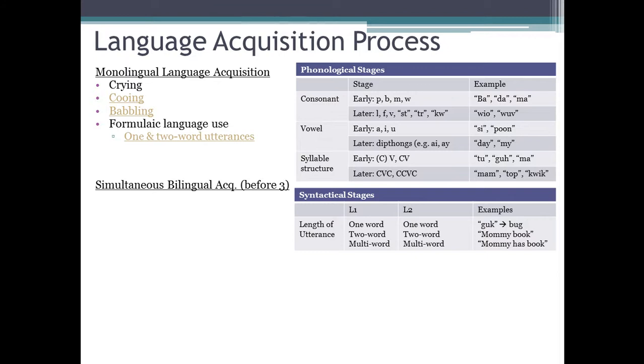With time and experience, children are going to modify and elaborate their meanings that they attach to words. So you can see that the one word and two word utterances here would look like this: the one word utterance might be an actual term like bug, or the child might make up a version for themselves and associate the same meaning, so guck meaning bug. The two word, we can see mommy book, and the multi-word be mommy has book.